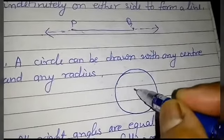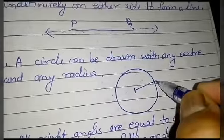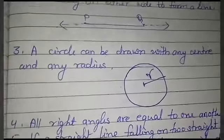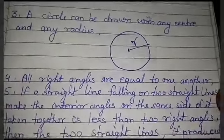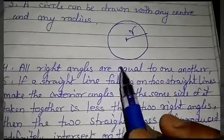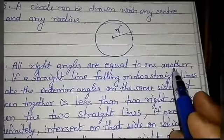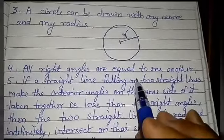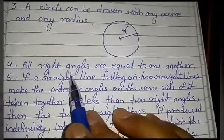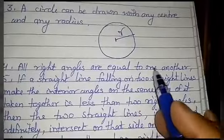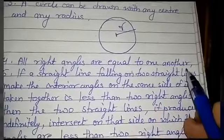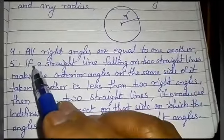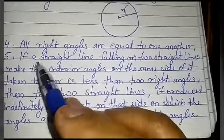Fourth postulate: all right angles are equal to one another. Each right angle equals 90 degrees, so all right angles are equal to one another.